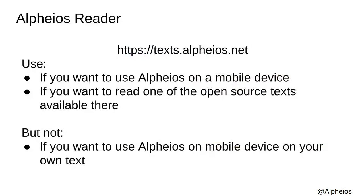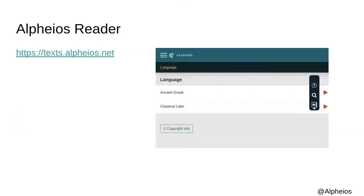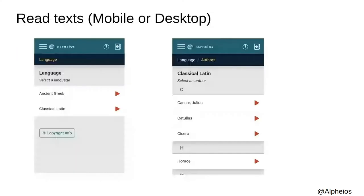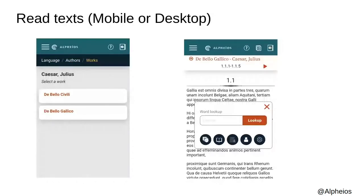So how do you use Alpheus on a mobile device? There are some options. First, you can use the Alpheus Reader. Alpheus has published a core set of open access Latin and Greek texts, and you can use the Alpheus Reader with any of these texts. I will bring you through a quick review of the mobile version of the Alpheus Reader interface. The Alpheus Reader is also available on the desktop, and there it looks quite similar to the browser extensions. You can navigate easily through the Reader interface to select a language, author, and work. All of the Alpheus tools that are available in the browser extension are also available in the Reader.